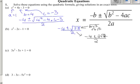Cancelling 2s now, we get minus 2 plus or minus root 7 as a final, totally simplified answer.